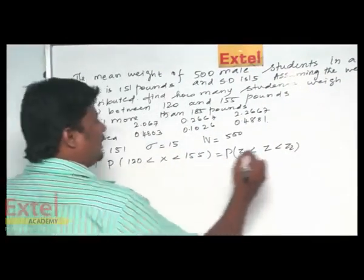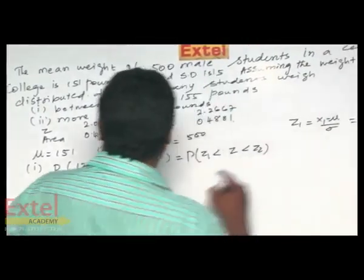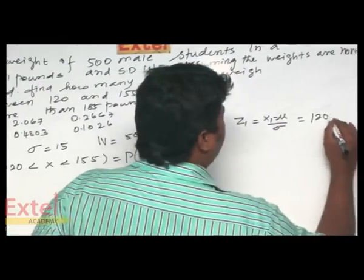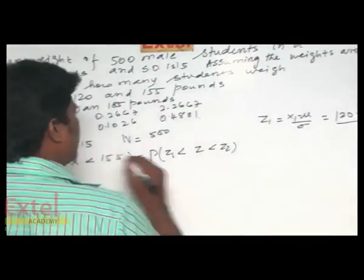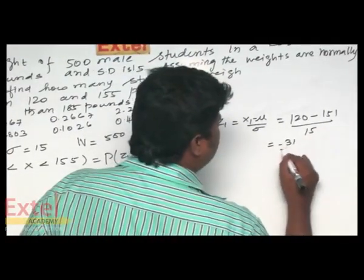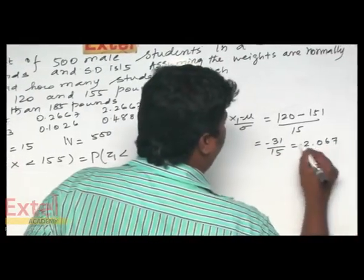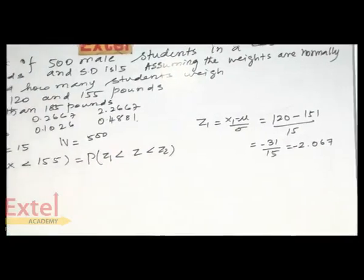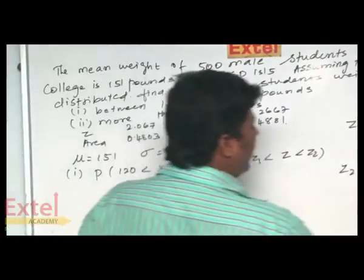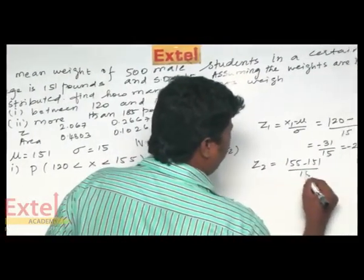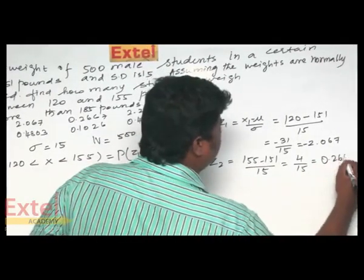Let us find out z1. z1 is equal to x1 minus mu divided by sigma. x1 is the first value: 120 minus 151 divided by 15. Therefore we will have minus 31 divided by 15, which gives minus 2.067. Next, let us find out z2. x2 is equal to 155 minus 151 divided by 15, which is equal to 4 by 15, which is equal to 0.2667.